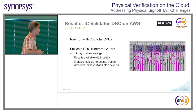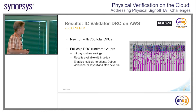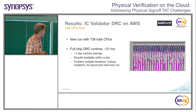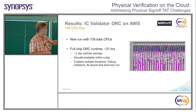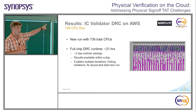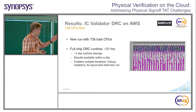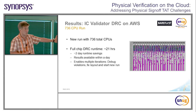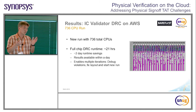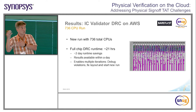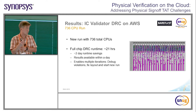This run was done with 736 CPUs. With this run, the runtime went from three days to 21 hours. With this runtime, we can get two to three iterations per week, compared to what we used before where we could only do one iteration per week.